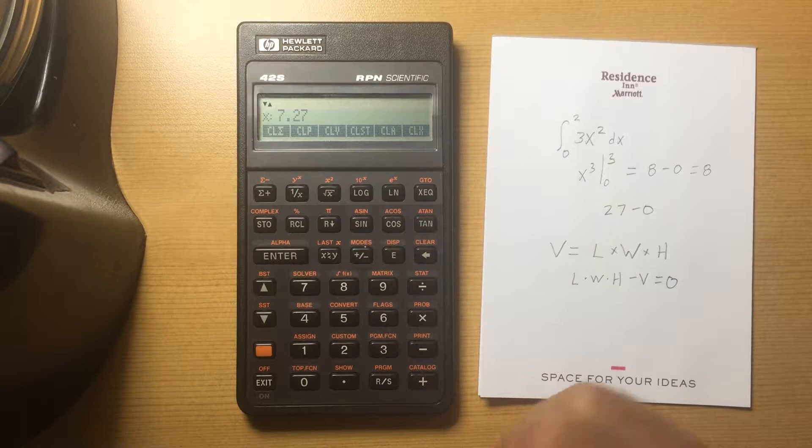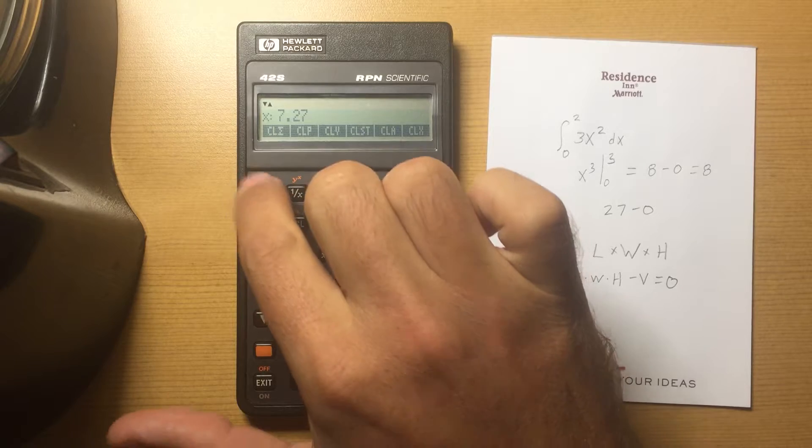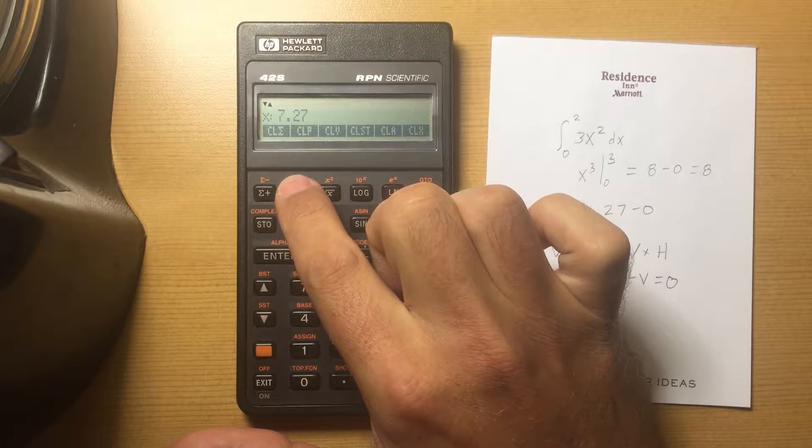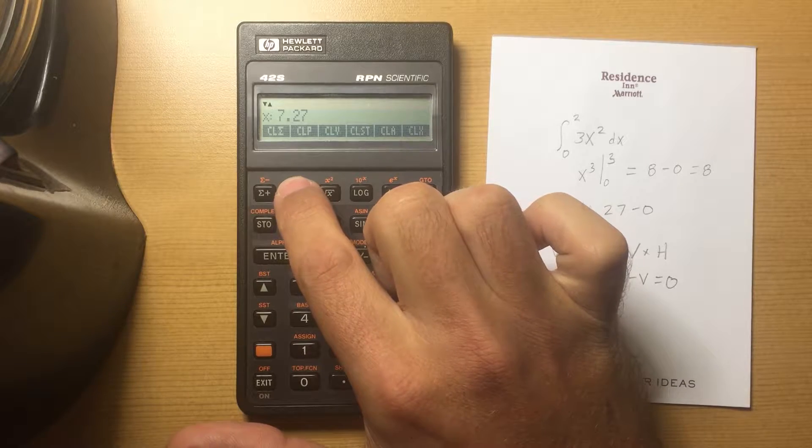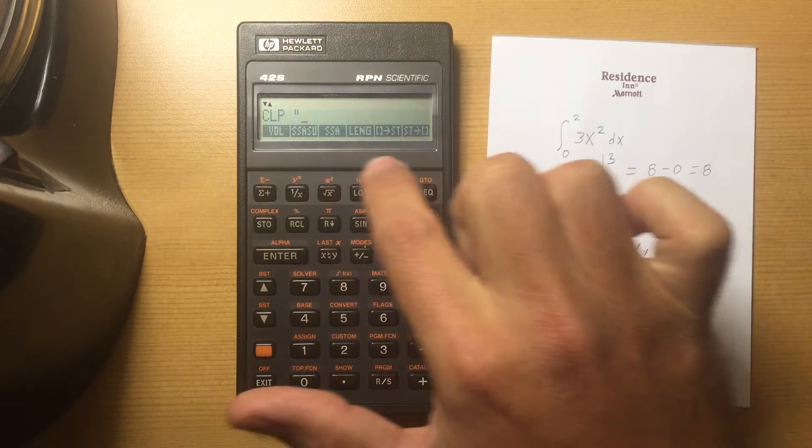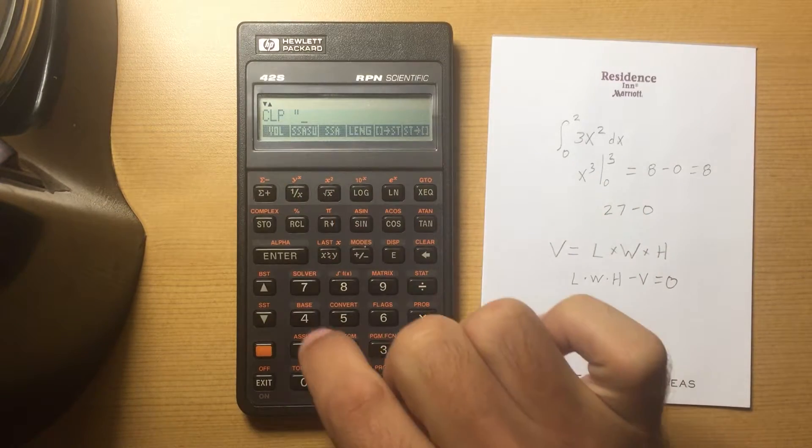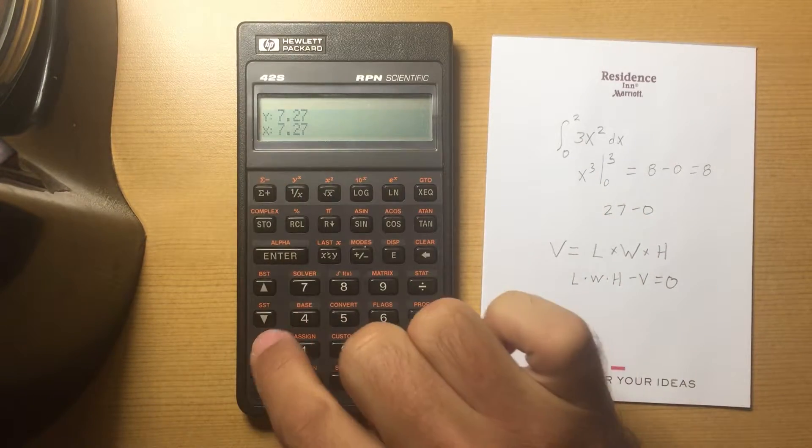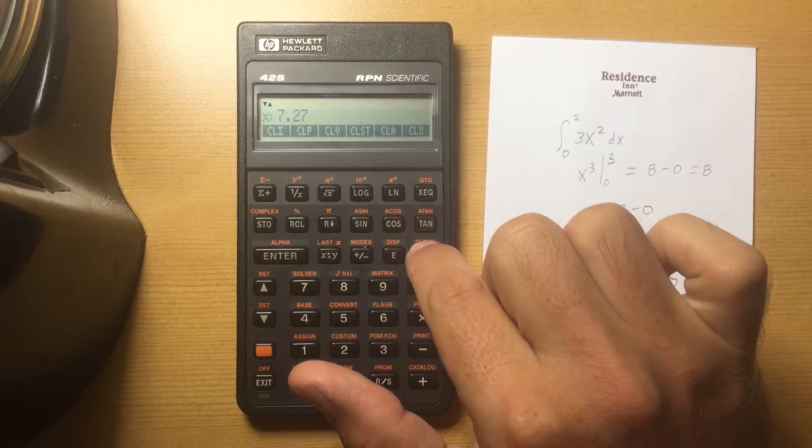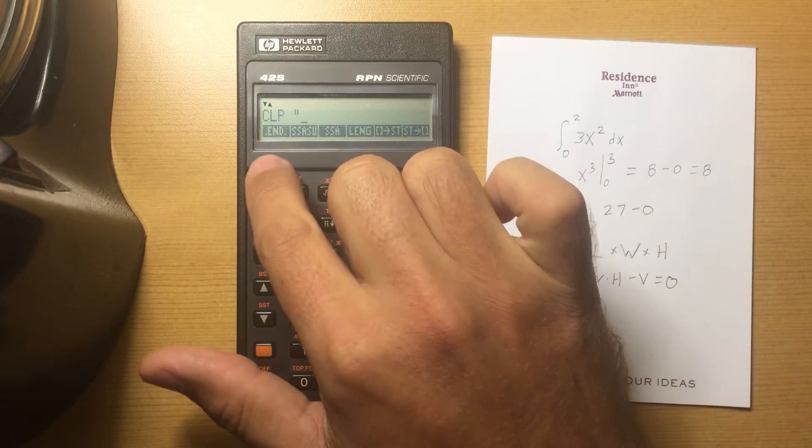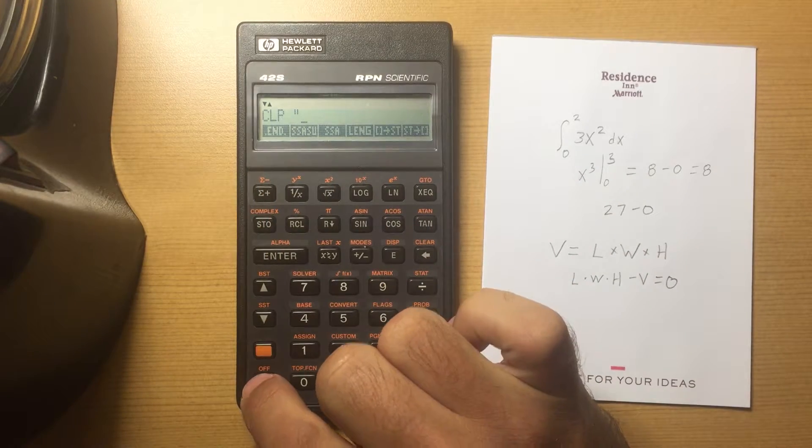CLP is Clear Program. If you select it, it'll show you a list of the programs that you have entered and you can select one to clear. I just cleared the volume program and it's gone. It just shows as an empty program space now.